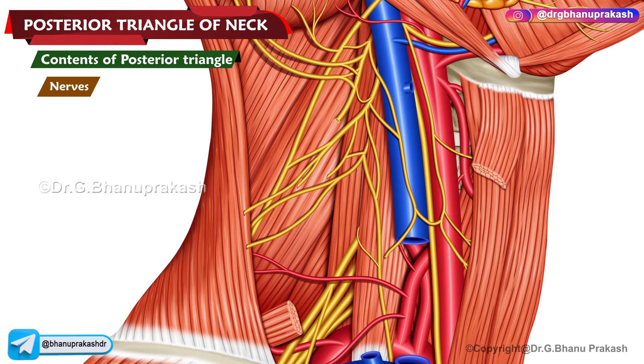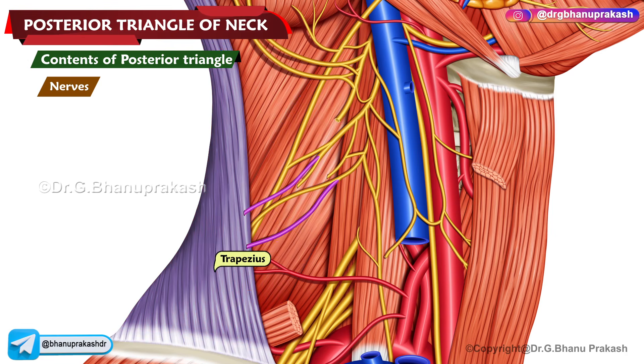The muscular branches include two small branches to the levator scapulae muscle, two small branches to the trapezius muscle, and the nerve to the rhomboid.